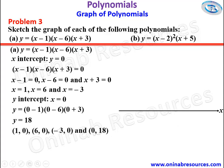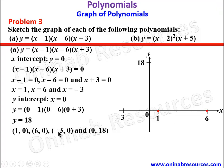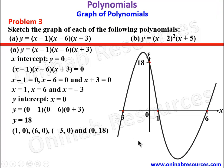We go ahead to sketch the graph with x-axis, y-axis, and the origin. On the x-axis we mark negative 3, 1, and 6; on the y-axis we mark 18. We plot all four points and join them with a smooth curve. That's the end of the solution to problem 3a.